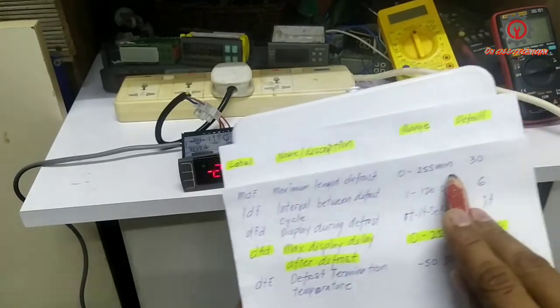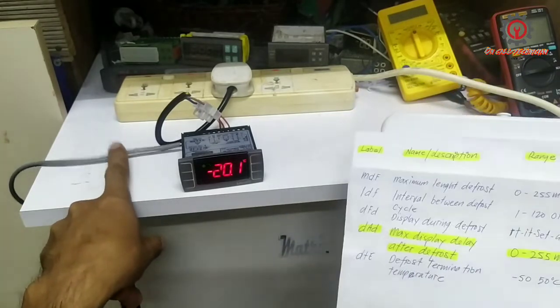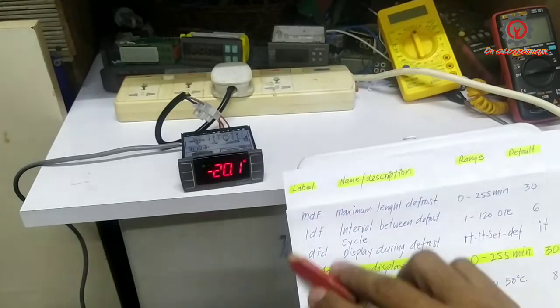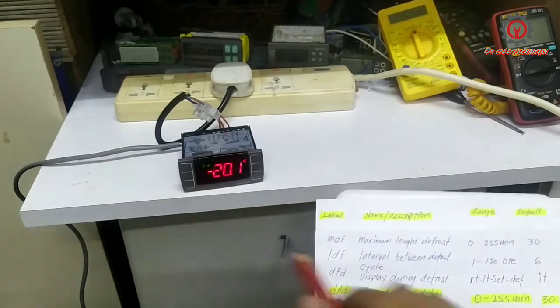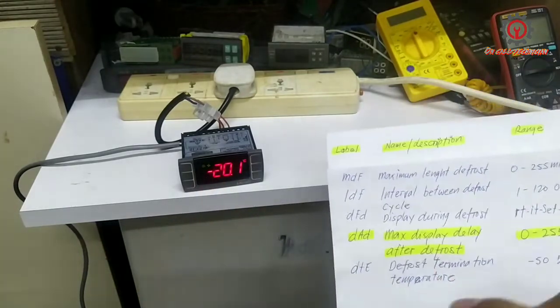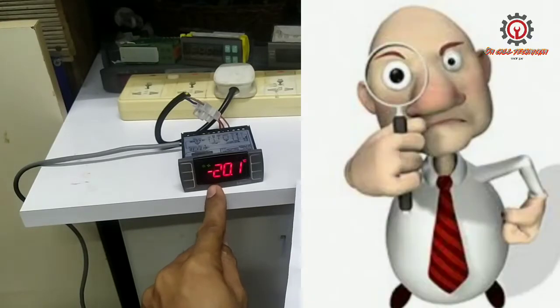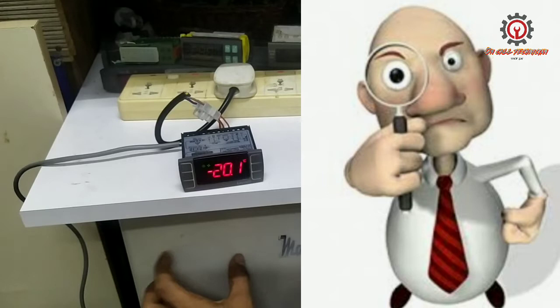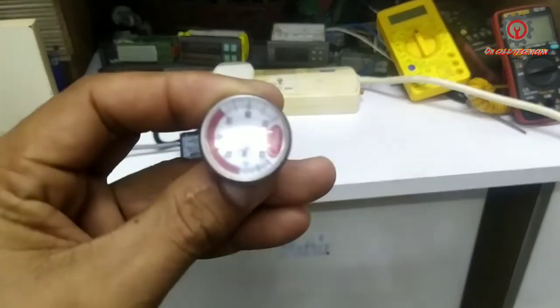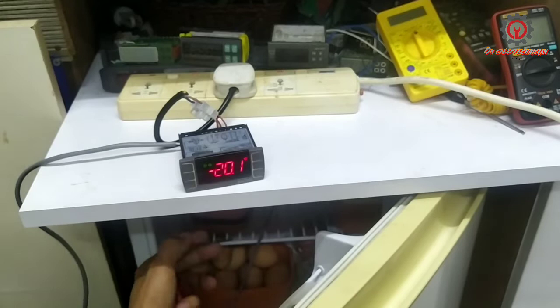That's why I keep saying on my previous blog, do not disengage the evaporator sensor for freezers because this DTE and MDF have a problem. The fan motor is running, but don't you know that the real temperature inside is not negative 20 because of this max display delay after defrost. It will retain negative 20, but the moment the auditor checks the temperature inside the freezer using either an analog thermometer or digital thermometer, they will check the temperature inside.